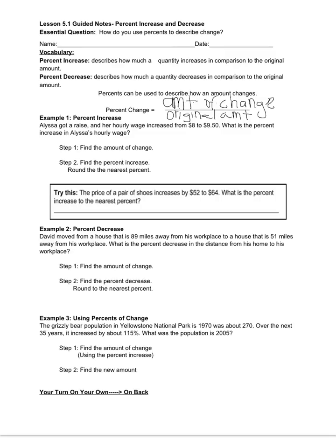So let's put this into action with our first example. Alyssa got a raise, and her hourly wage increased from $8 to $9.50. What is the percent increase in Alyssa's hourly wage? Using this formula, we first need to find the amount of change. So from $8 to $9.50, our amount of change is $1.50, and I'm going to divide that by the original amount, which in this problem is $8.